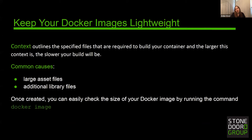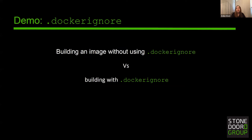This raises the question: what should you do if you have a large build context for your container? The common causes of this are large asset files or additional library files. Once we have our images created, we can easily check the size of them by running our Docker image command. I'm going to show you a quick demo where we'll be showing you a build without using a Docker ignore file, and then with a Docker ignore file, and that size difference.